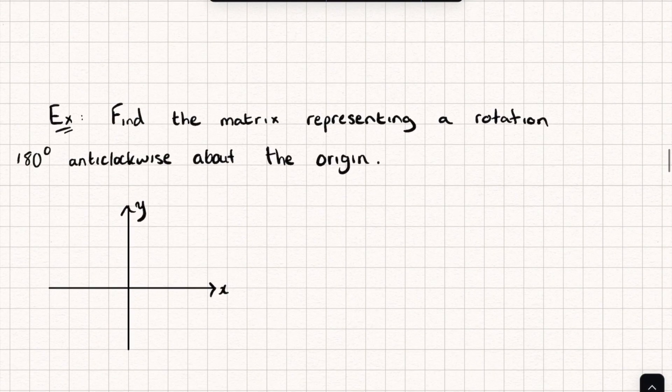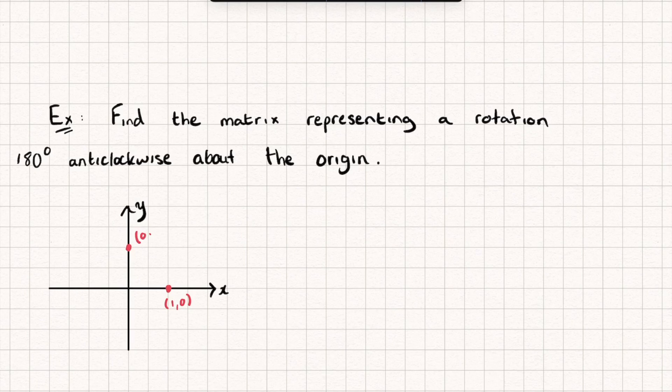Let's now look at a rotation of 180 degrees, okay, about the origin, and we're going to do it the same way. So I've got my point (1,0) here and then I've got my point (0,1). So what's going to happen to the point (1,0)?